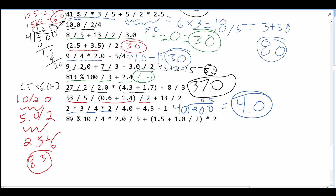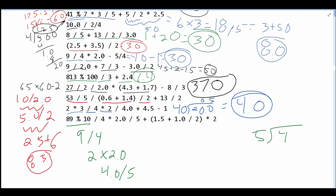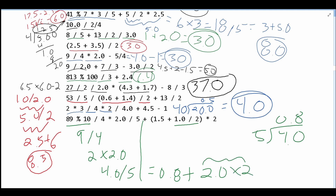Next, and lastly, we have 89 modulus 10, which gives us 9. Dividing by 4 gives us 2. Multiplying by 2.0 gives us 4.0. Then dividing by 5 — 4.0 divided by 5 — gives us 0.8. We then add this to 1.5 plus 0.5, which is 2.0, multiplied by 2, giving us 4.0. And 4.0 plus 0.8 gives us 4.8 as our final answer.